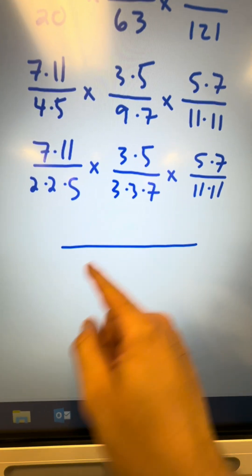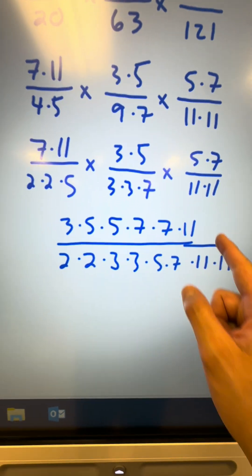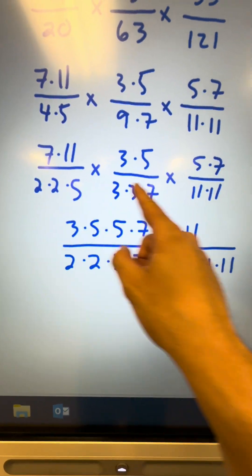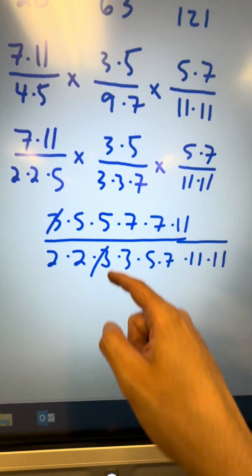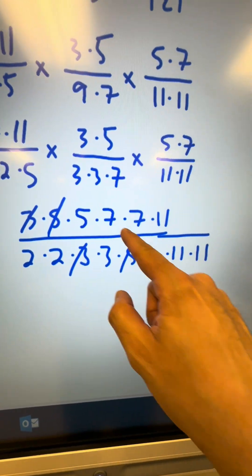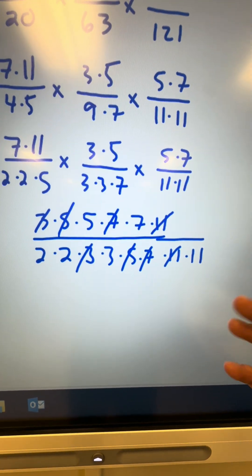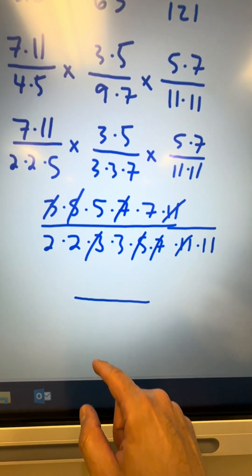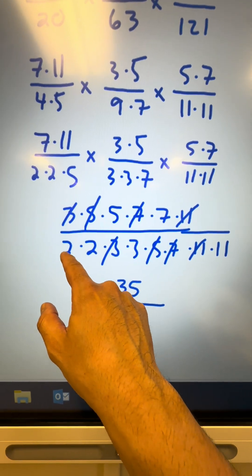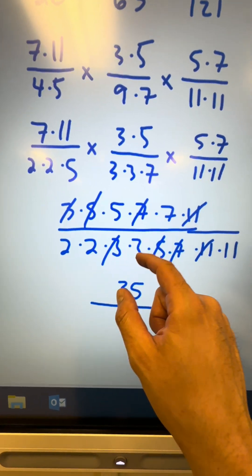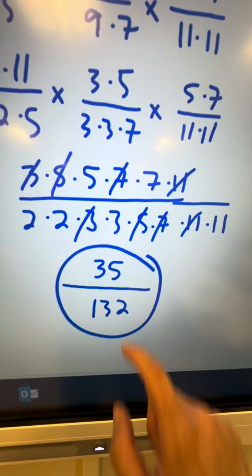In the next step, reorganize everything least to greatest in one fraction — all numerators multiplied together on top, all denominators on the bottom. Now eliminate common factors: a pair of 3s, a pair of 5s, a pair of 7s, and a pair of 11s. Whatever factors are remaining, multiply them for the final answer. On top I have 5 and 7, so 5 times 7 is 35. On the bottom I have 2, 2, 3, 11 — that's 4 times 3 is 12, times 11 is 132. Final answer: 35 over 132.